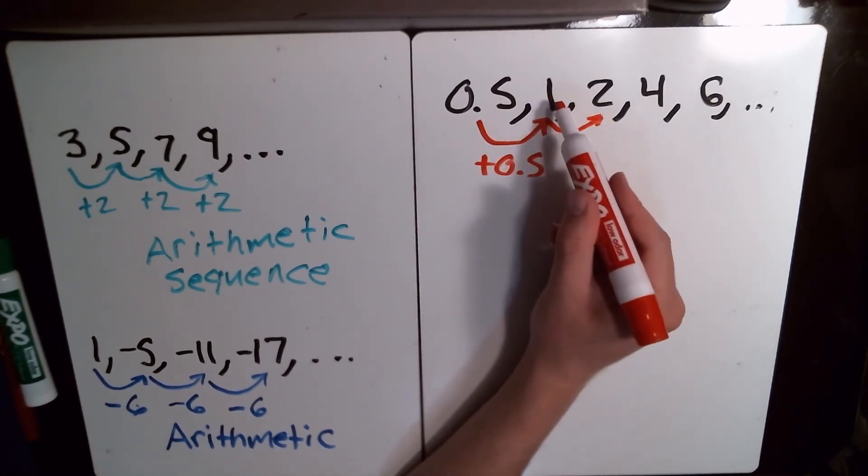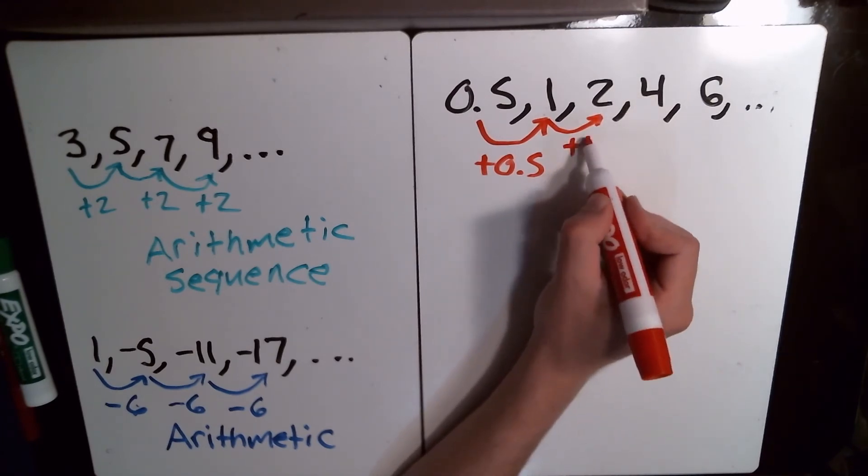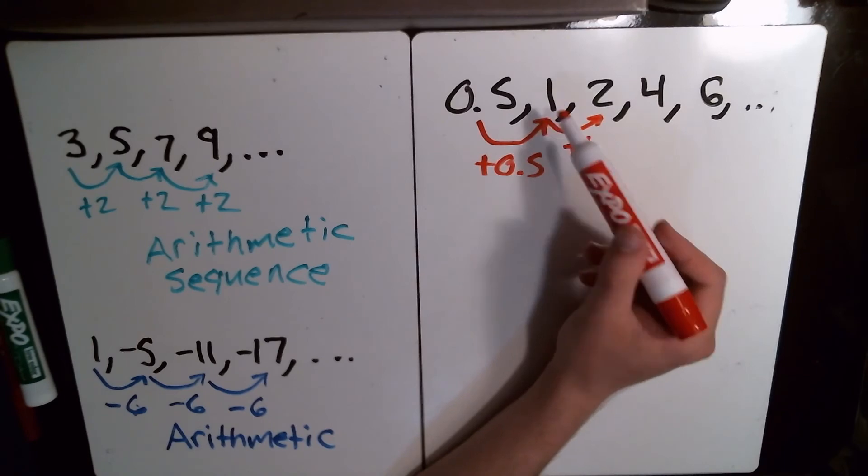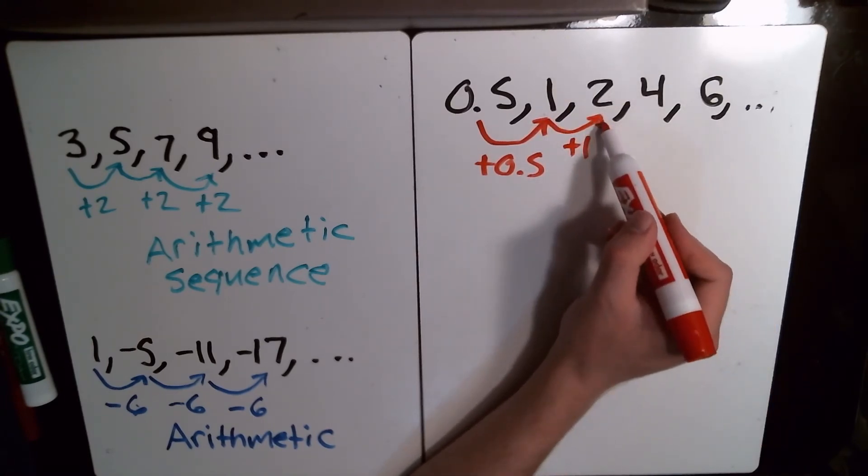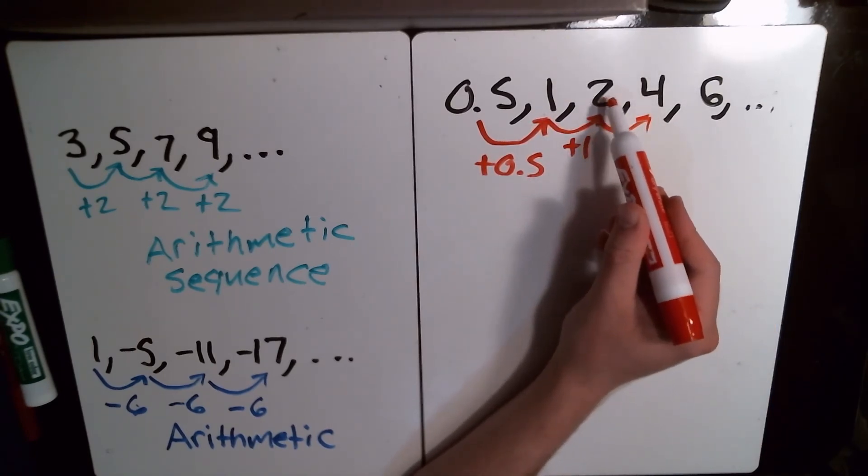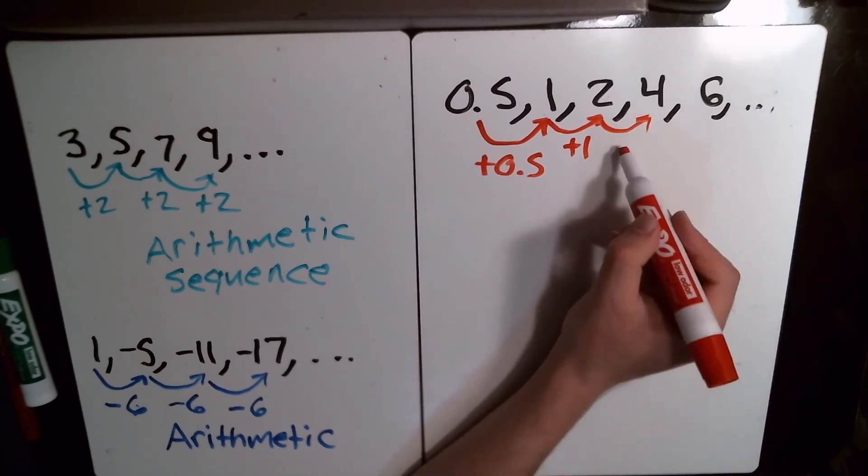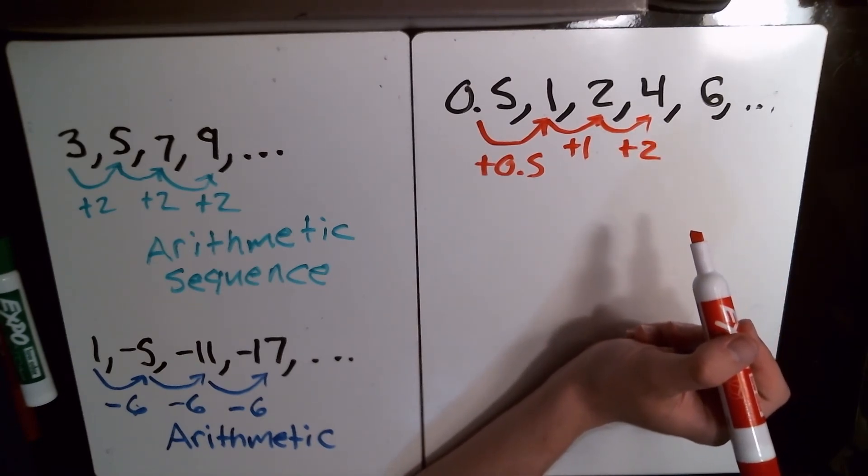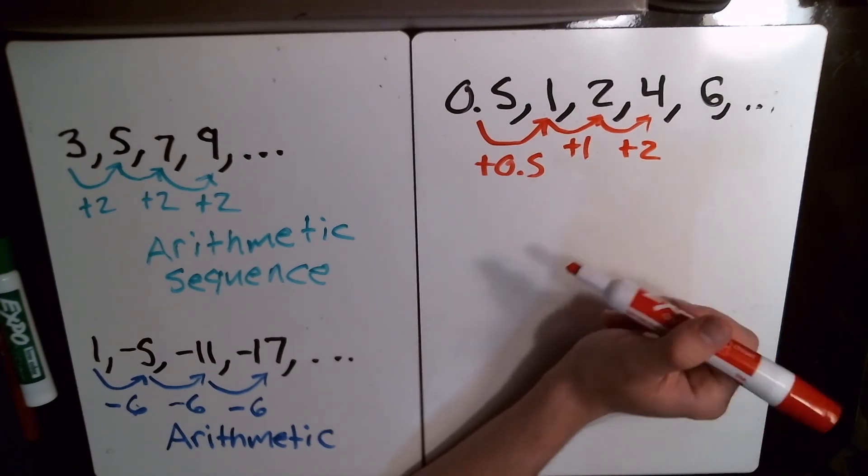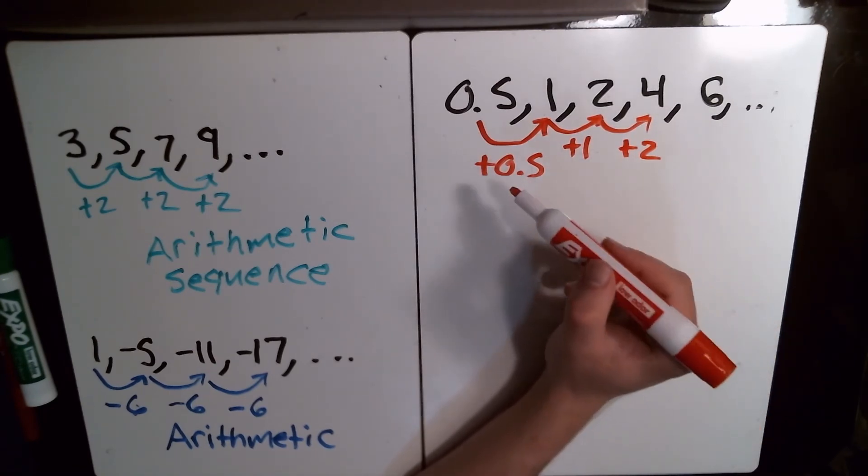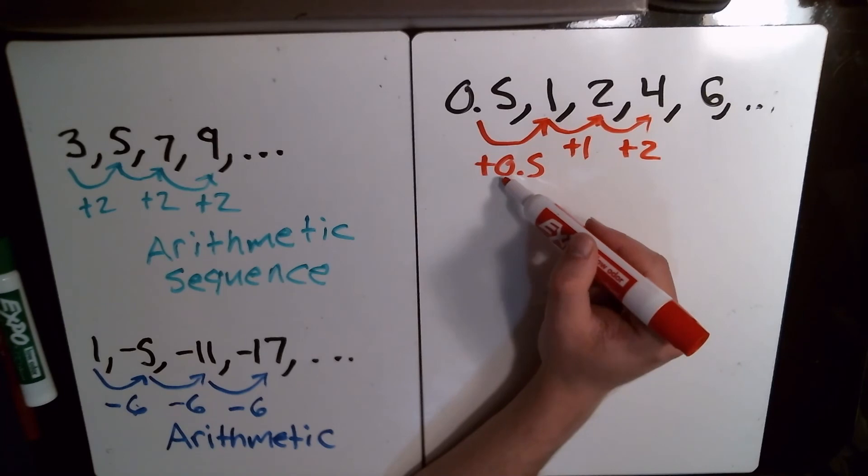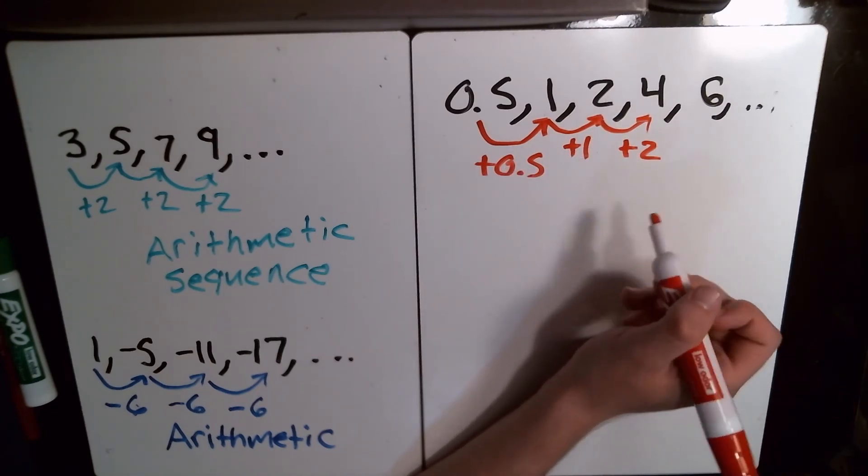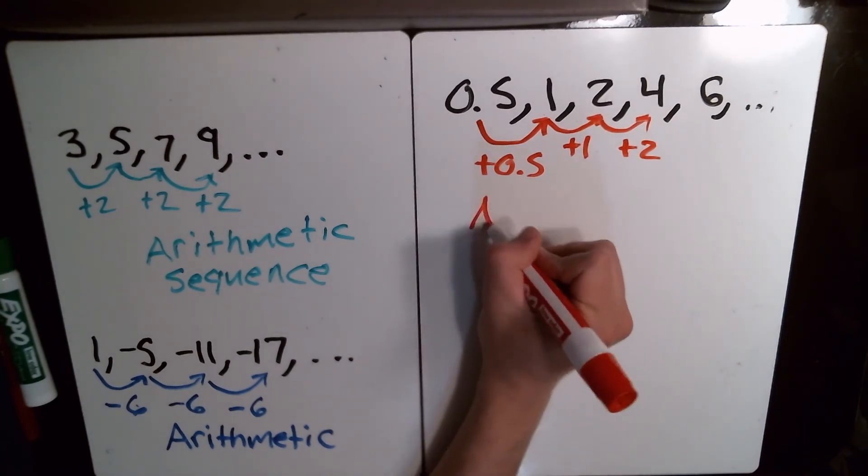Then to go from 1 to 2, how do we get from 1 to 2? We add 1. Right, 1 plus 1 is 2. And then to go from 2 to 4, what are we doing? We're adding 2. Now is this arithmetic? No, because these numbers aren't the same thing. It's not a constant rate of change, so this is not arithmetic. It is innocent.